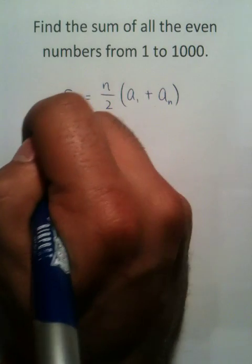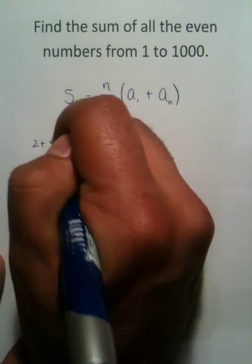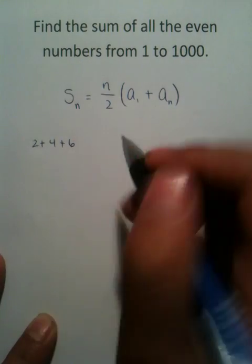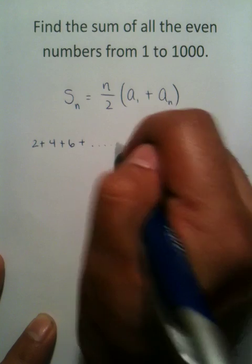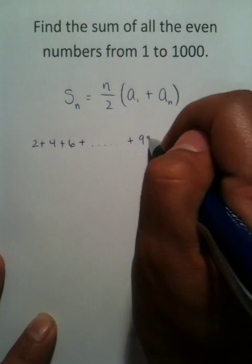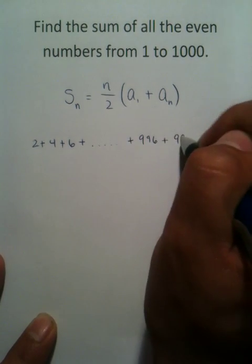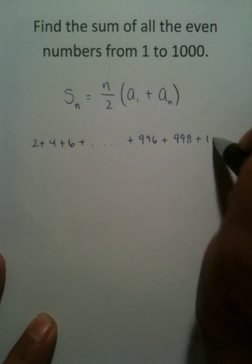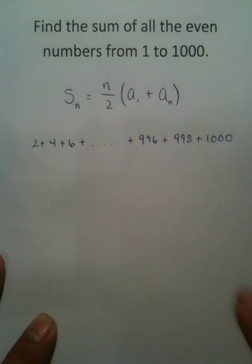The reality is you're really starting at the number 2 and you're adding the next even number and the next even number. So 2 plus 4 plus 6 plus dot dot dot plus 996 plus 998 plus 1000. So you're adding all these things together.